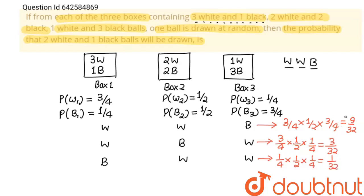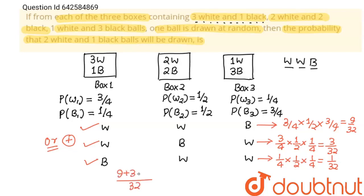We add all three probabilities because either one case or another will happen — there is an OR between all three cases. For OR, we add the probabilities. All have denominator 32, so LCM is 32, giving us 9 + 3 + 1 = 13 upon 32, which is our final answer.